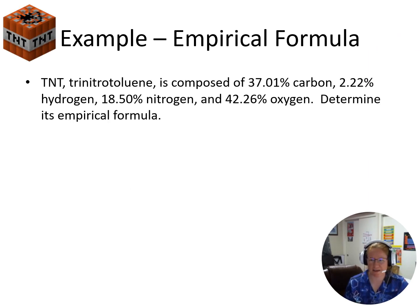Let's try one more. TNT. We get four elements this time. So again, percent composition. So we're just going to say we have 100 grams of the compound. So our percentages become our grams of the individual elements. So we have 37.01% carbon. So 37.01 grams of carbon. One mole in 12.01 grams gives us 3.08.